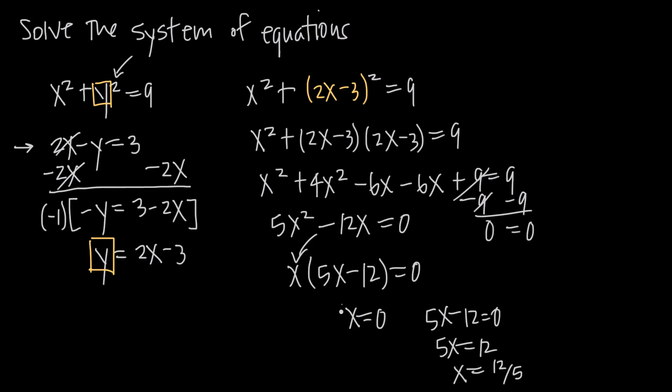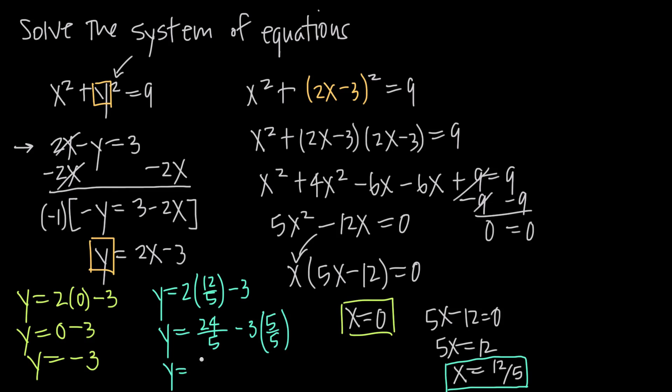So now I have two possible solutions for x. I have x equals 0 and I have x equals 12 fifths or x equals 12 over 5. I need to find the corresponding solutions for y and I can do that by plugging these values into this equation I have here for y. So if we plug in x equals 0, we're going to get y equals 2 times 0 minus 3. y is equal to 0 minus 3 or y is equal to negative 3. If I plug in x equals 12 fifths, I'm going to get y is equal to 2 times 12 over 5 minus 3. Distributing the 2, I'm going to get y is equal to 24 over 5 minus 3. If I find a common denominator, I have to multiply this 3 by 5 over 5. So I'm going to get y is equal to 24 over 5 minus 15 over 5, which is going to be y is equal to 9 over 5.